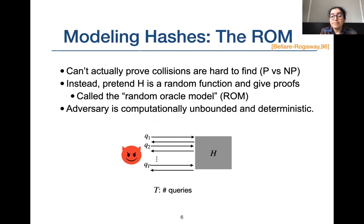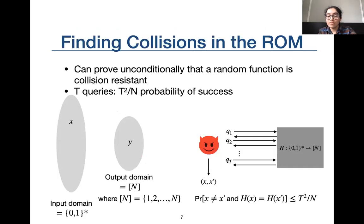Very quickly: an adversary is any malicious entity that attempts to prevent a cryptosystem from achieving its security property. T denotes the time taken by an adversary, but we bound the number of queries the adversary makes to the oracle by T, not the computation time, which can be unbounded. For random functions, there is an unconditional proof that they are collision resistant.